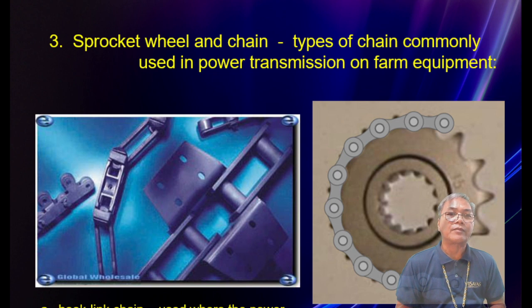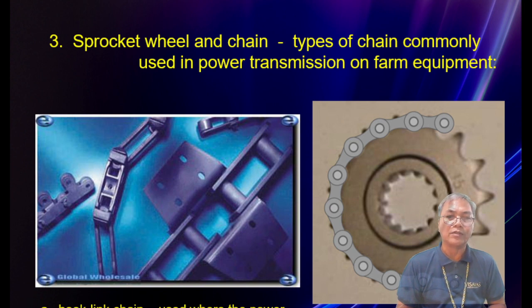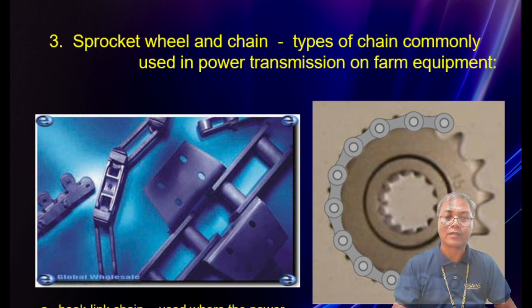Next is the sprocket wheel and chain. These types of chains are commonly used in power transmission on farm equipment. We are familiar with this because bicycles use the roller chain. The hook link chain is used where power requirement and speed are relatively slow. The roller chain is more common and more efficient than a hook link chain since the rollers reduce friction against the sprocket teeth. Bicycles use this roller chain system of transmission.